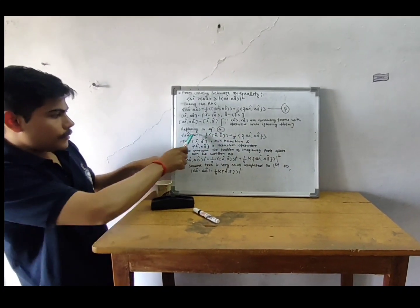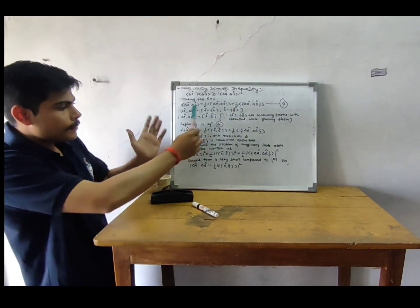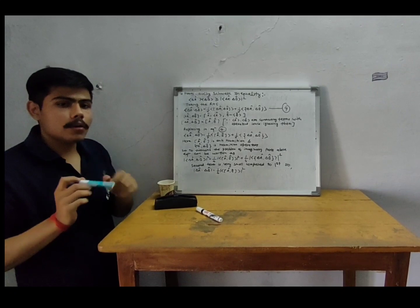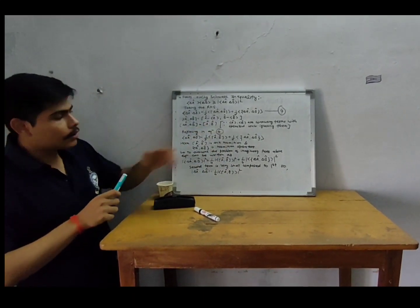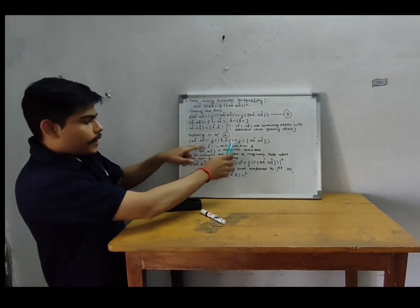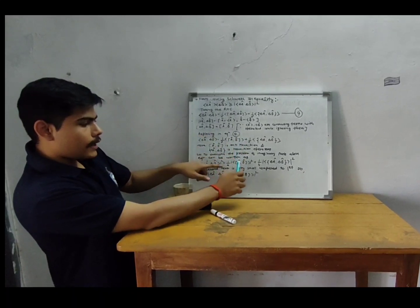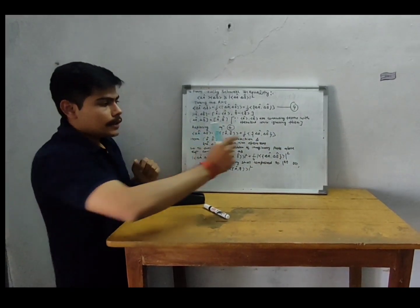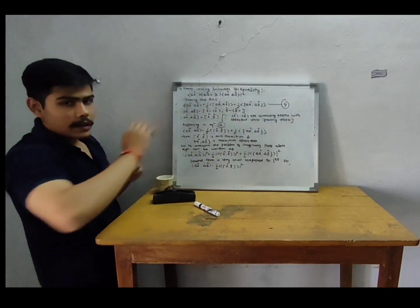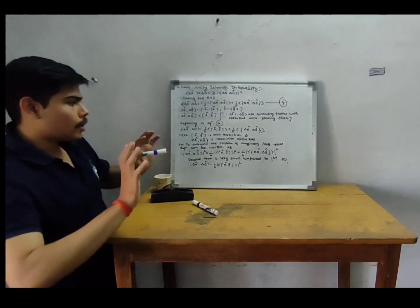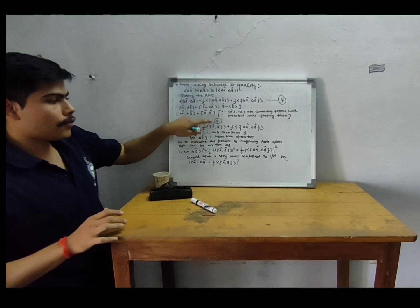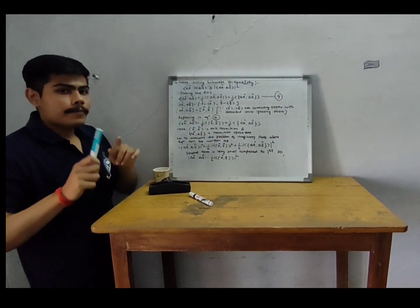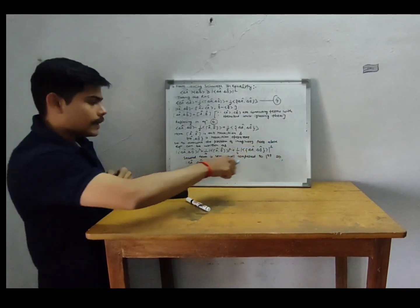When we square the RHS, it leads to a formula of the form (A + B) whole squared. Expanding this directly, we get the first term squared — that is one-quarter times the square of the commutator term — plus one-quarter times the square of the anti-commutator term. There should be a cross term 2AB, but 2AB equals 2 times the commutator of A with B times the anti-commutator of del A with del B, and those two terms cancel each other, giving zero. So that term is omitted.